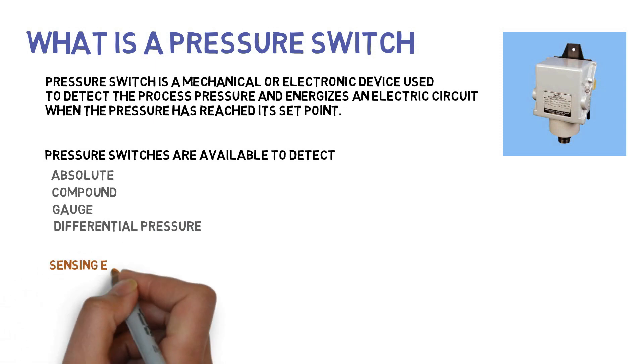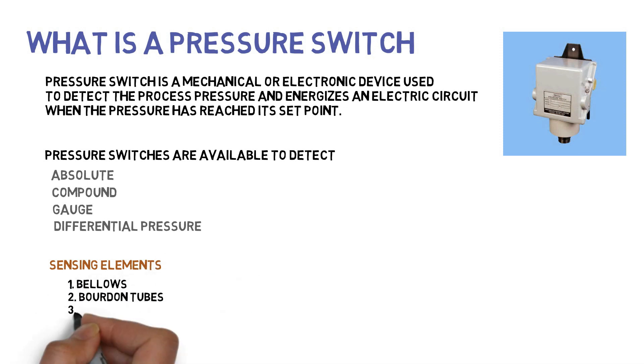Sensing elements used in pressure switches are bellows, bourdon tube, diaphragms, or other elastic sensors.